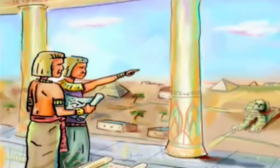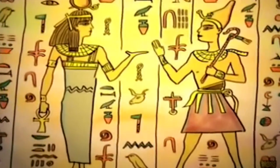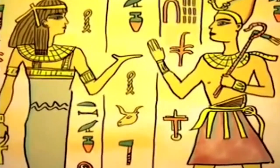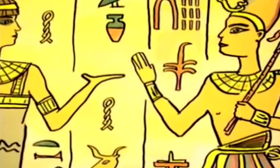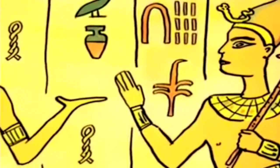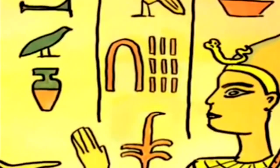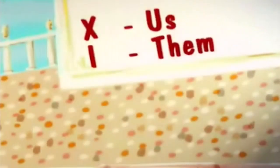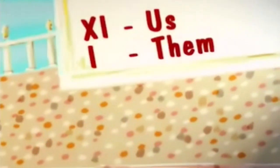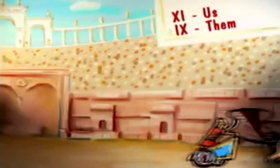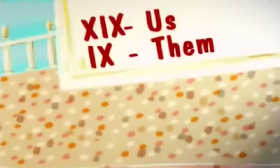The ancient Egyptians used objects from their everyday life as symbols. A rod stood for one, a cattle hobble was ten, a coiled rope was one hundred, a lotus flower was a thousand, and so on. The number 19 was a cattle hobble and nine rods. The early Romans created a number system that we still see today. Along with other symbols, they used an X for ten and an I for one. By the Middle Ages, Romans were putting the I to the right of the X for eleven, and to the left for nine, so they wrote 19 as XIX.